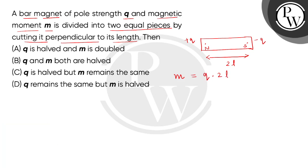I have told here question that this bar magnet from two equal pieces cut from its length perpendicular, so this is the magnetic length. So, when we cut it perpendicularly, we can see that the magnetic length is half of the previous magnetic length and the pole strength of each magnetic pole, north and south pole strength is the same.